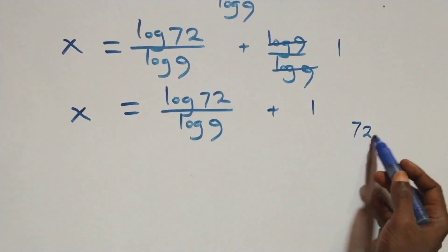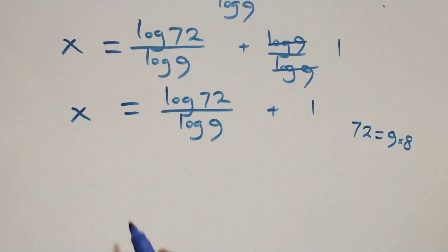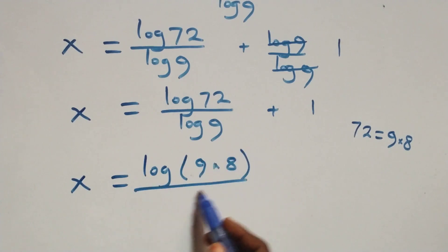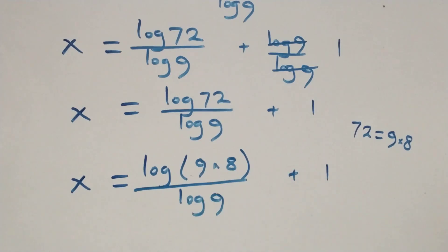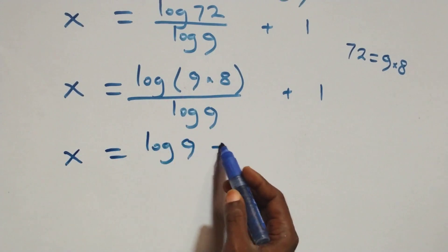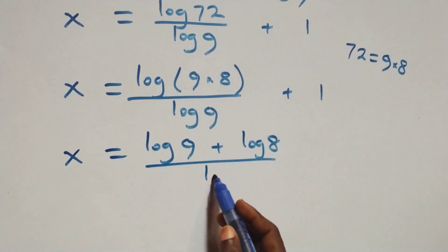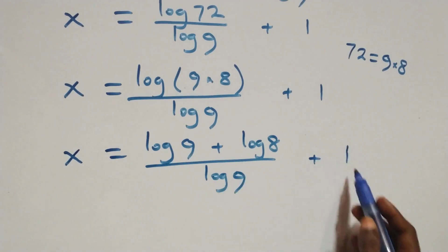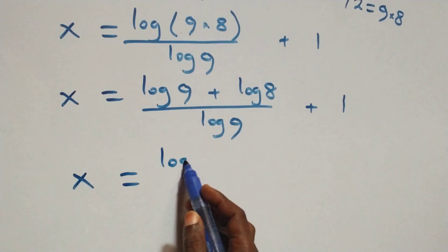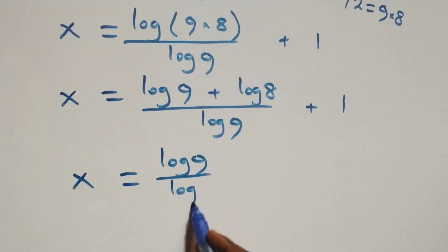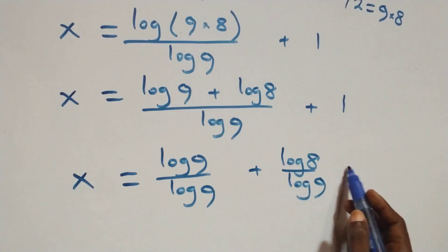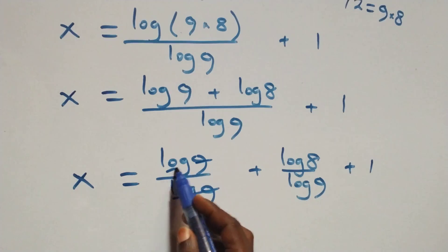Also, 72 can be expressed as 9 times 8. So x equals log(9 times 8) over log 9 plus 1. Applying the product rule of logarithms, x equals (log 9 plus log 8) over log 9 plus 1. Separating into two fractions: x equals log 9 over log 9 plus log 8 over log 9 plus 1. Here log 9 cancels each other, leaving one.